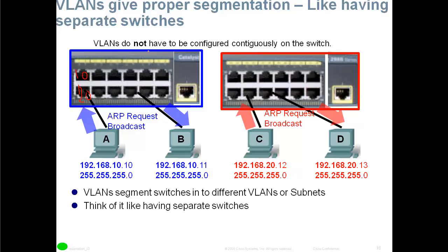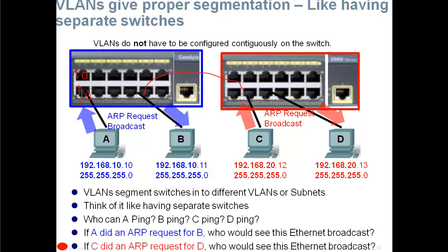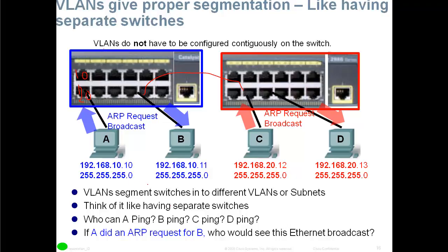VLANs segment the switch into different subnets — it's like having separate physical switches. Think about who can ping whom: devices can only ping PCs on their own local VLAN. For a packet to cross from one VLAN to another, it needs a Layer 3 device. If A sends an ARP request, only B will see it. If C sends an ARP request, only D will see it — C and D are on VLAN 20, so A and B won't hear that broadcast.